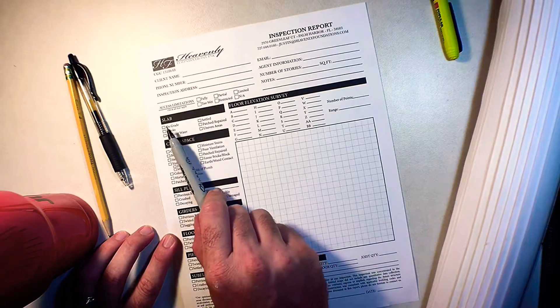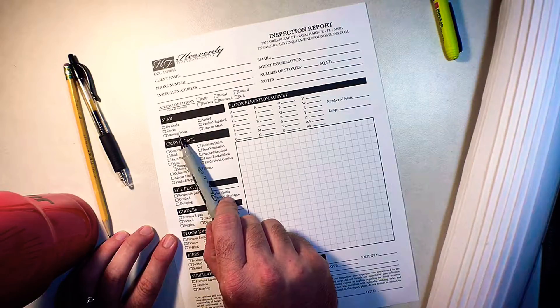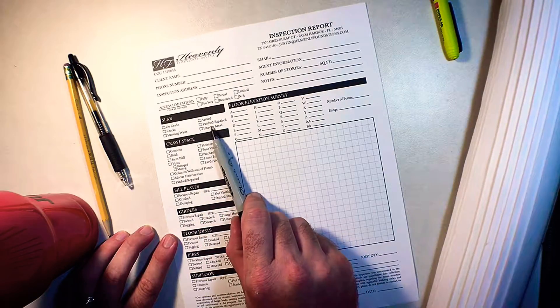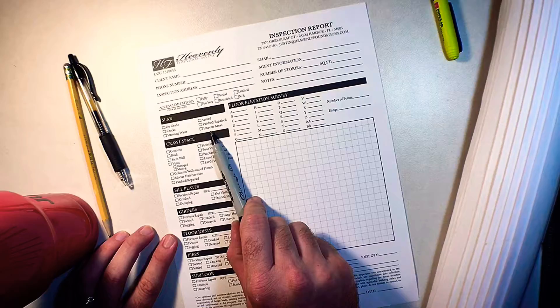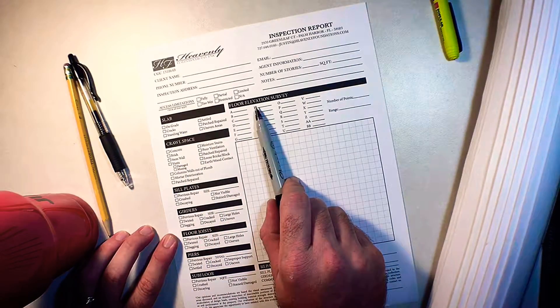Let's determine for right now if it's slab on grade. We get into if there's any cracks, is there any standing water, has it settled, is it patched or repaired or is there uneven areas? If any of this is determined, then we go over into our floor elevation survey.